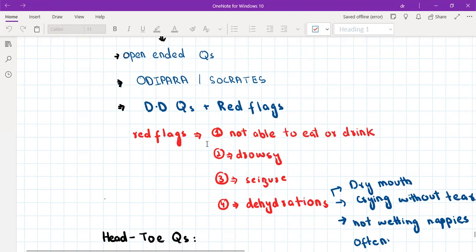So these red flag questions essentially tell you whether the child is in any immediate danger. If any of these is positive, the answer is yes, and you are in the GP practice, you will immediately refer this patient to the hospital. Okay. So these red flags are not being able to eat or drink, drowsy, having seizures and dehydration. So how will you ask the parent? You will ask the parent, is he able to eat and drink normally? Is he active and playful or is he drowsy? Has he had any fits? Okay. And have you noticed any dryness of his mouth? Is he crying without tears? Is he wetting his nappies as often as usual? Okay. So we will ask these questions in each and every sick child.